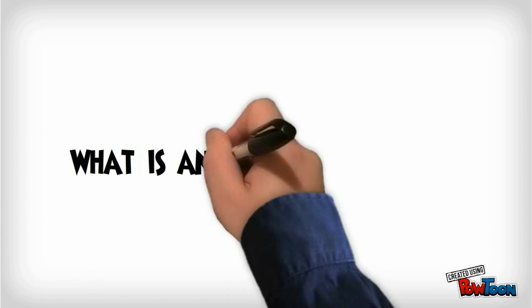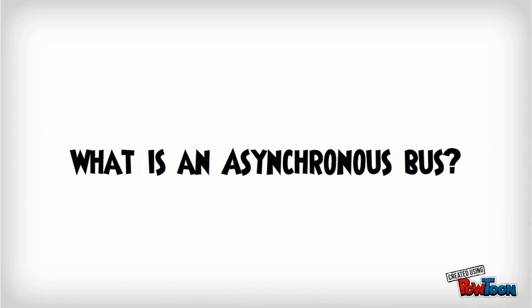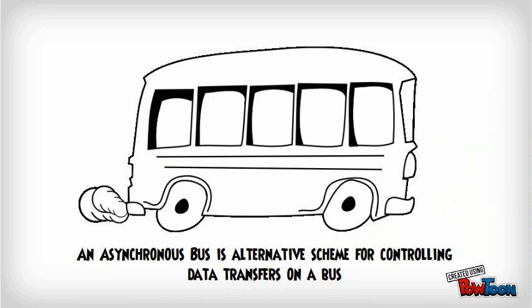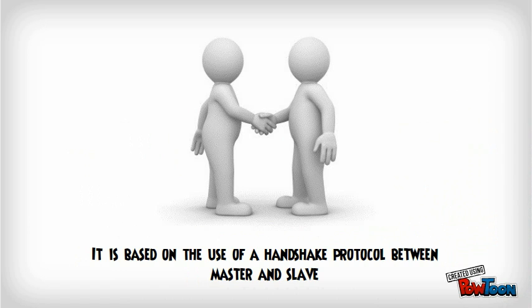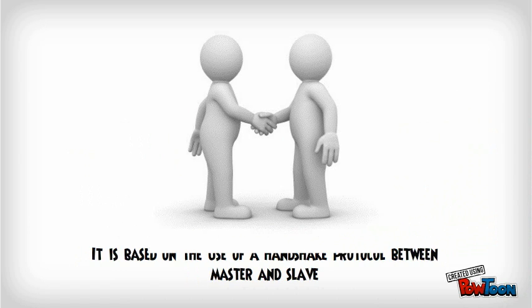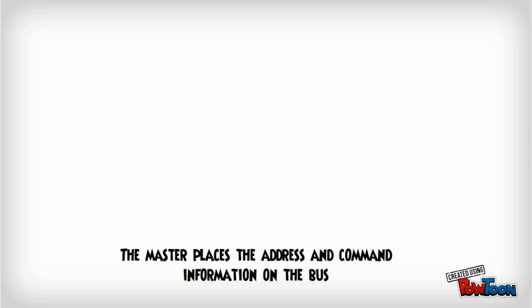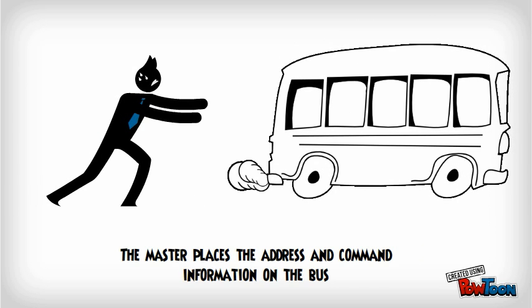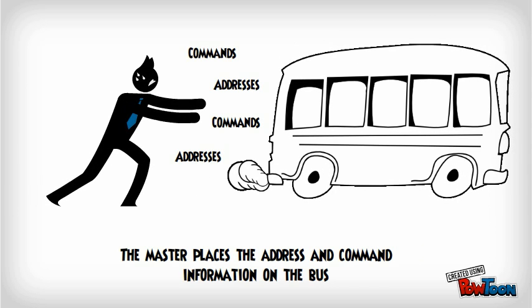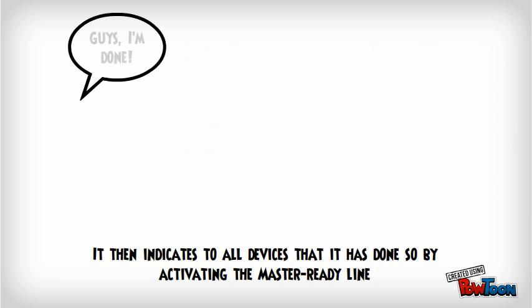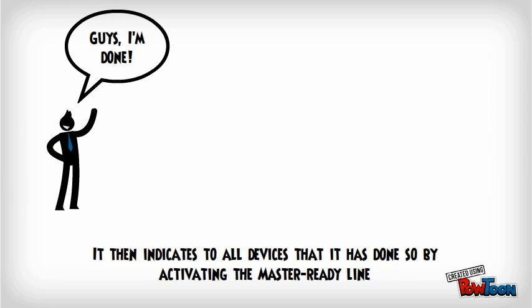What is an asynchronous bus? An asynchronous bus is an alternative scheme for controlling data transfers on a bus. It is based on the use of the handshake protocol between the master and slave. The master places the address and command information on the bus, then indicates to all devices that it has done so by activating the master-ready line. This causes all devices to decode the address sent by the master.